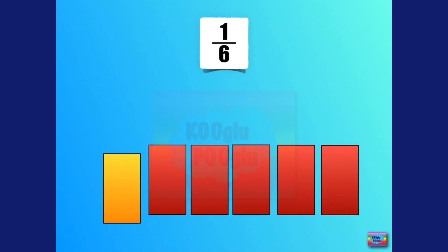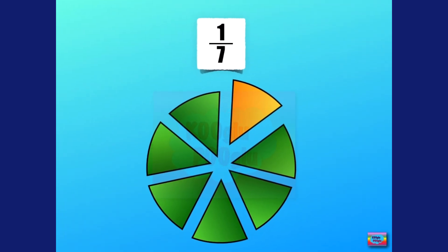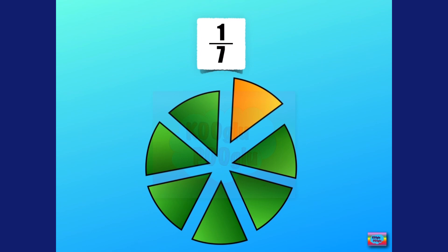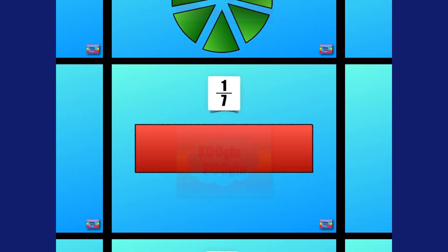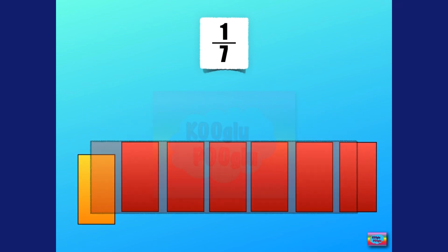Here we have one seventh. This means one whole has been divided into seven parts, equal parts to be specific. Chop, chop, chop, chop, chop, chop.